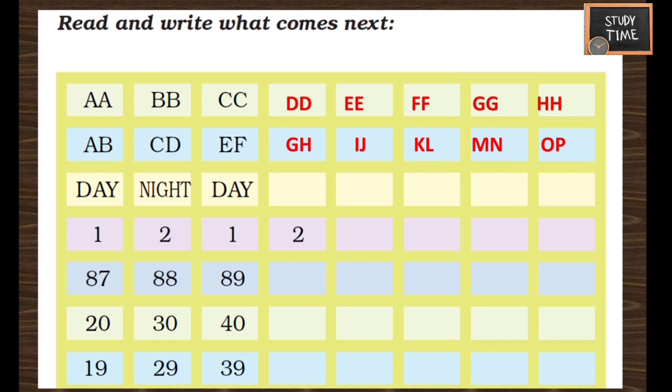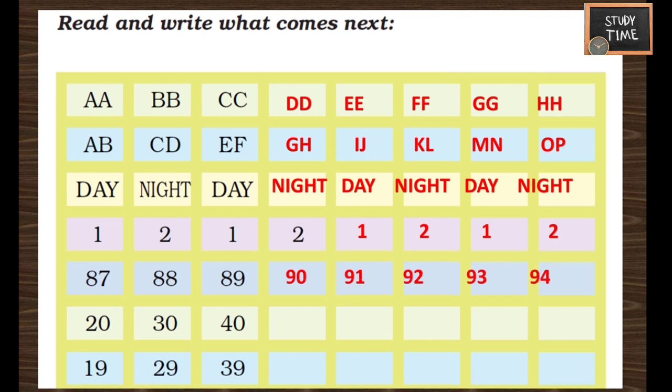Next: day, night, day, night, day, night. Next, write 1, 2, 1, 2 — you can repeat the pattern 1, 2, 1, 2. Next: 87, 88, 89 — from 87 they have started, just increase the number by 1, so you will get 90, 91, 92, 93, 94. Next: 20, 30, 40, 50, 60, 70, 80, 90.